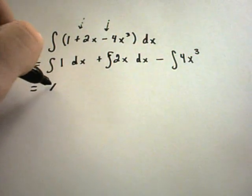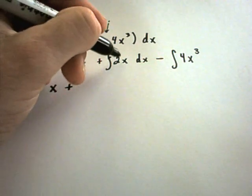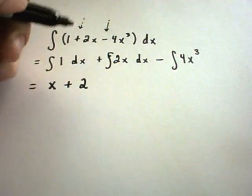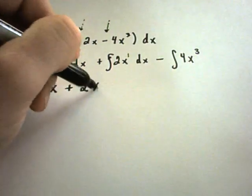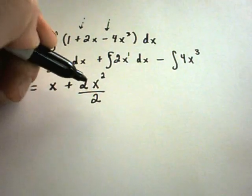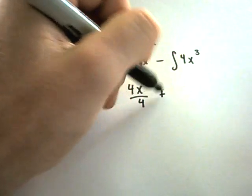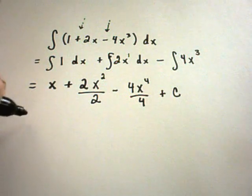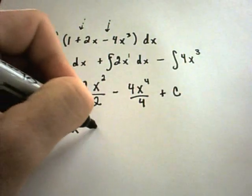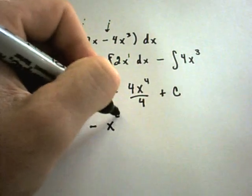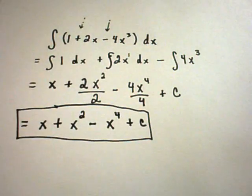The anti-derivative of 1 is just x. Just like with derivatives the constant gets multiplied through — when you find anti-derivatives the constant also gets multiplied through. For x to the first, add 1 to the power and divide by that new power to get 2x squared over 2. Minus 4x to the fourth over 4. Simplifying, the twos cancel to give x plus x squared, the fours cancel to give minus x to the fourth, plus c.